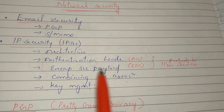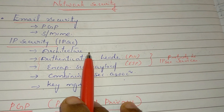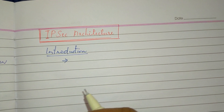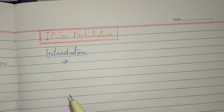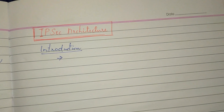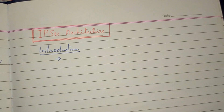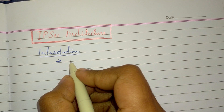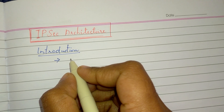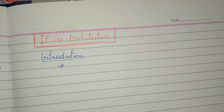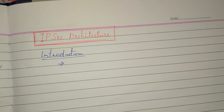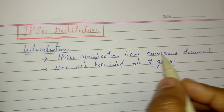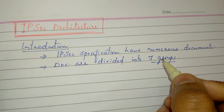Now, we will be talking about IP Security Architecture. In the first introduction, we will be talking about IP Security — security at the IP level — by encrypting and providing authentication and key management. In our IP Security Specifications, the documents are divided into 7 groups.